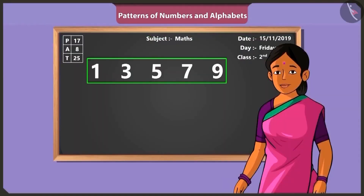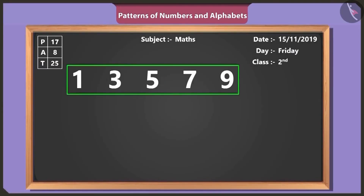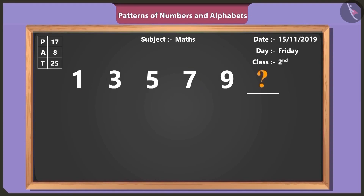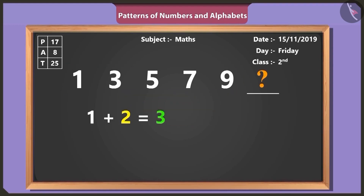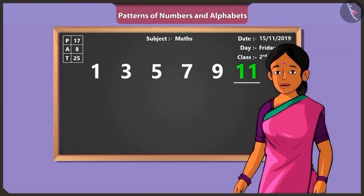Vinny, can you see a pattern in these numbers? One, three, five, seven, nine. These numbers are written in ascending order. So tell me, which number comes after nine? Ten comes after nine. No, Vinny, look carefully. These numbers are written in a pattern. By adding two to one you get three, and this is how the pattern builds up. Two added to three gives five. Two added to five gives seven. Two added to seven gives nine. And two added to nine gives eleven. Therefore, eleven comes after nine in this pattern. Well done.